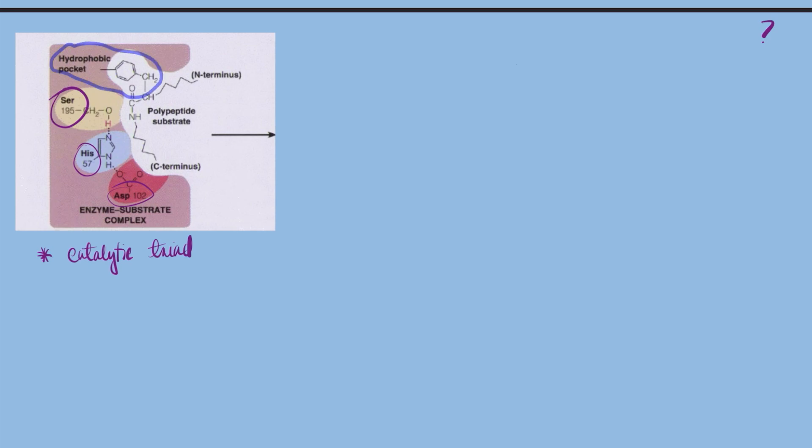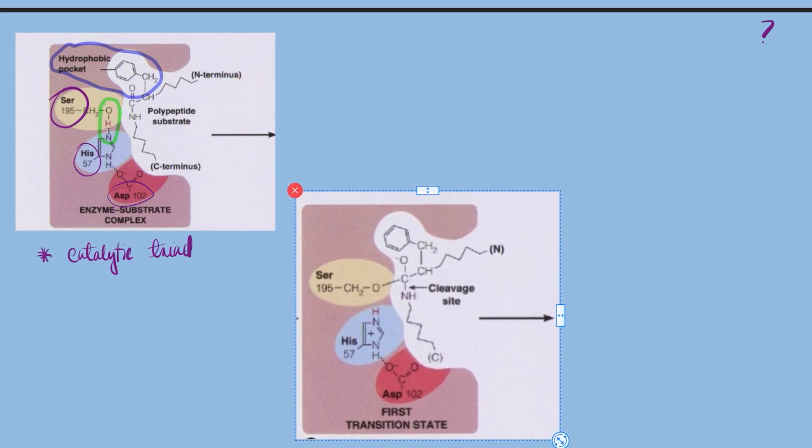During step number two, histidine-57 acts as a base and deprotonates the hydroxyl group of serine-195 to make it more nucleophilic. As this occurs, serine-195 attacks the carbonyl group, forming thus a covalent bond. This is called covalent catalysis, and the tetrahedral intermediate is then formed.